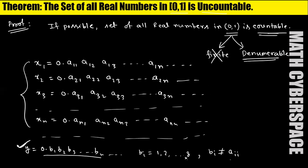If y = x1, there is a digit a11 of the form a_ii. If y = x2, we find a22; if y = x3, we find a33; and if y = xn, we find a_nn. So for any element in the list, we get a diagonal digit a_ii. But by construction b_i ≠ a_ii, so y cannot equal any xn in the list. This is a contradiction with our assumption that the set is countable.